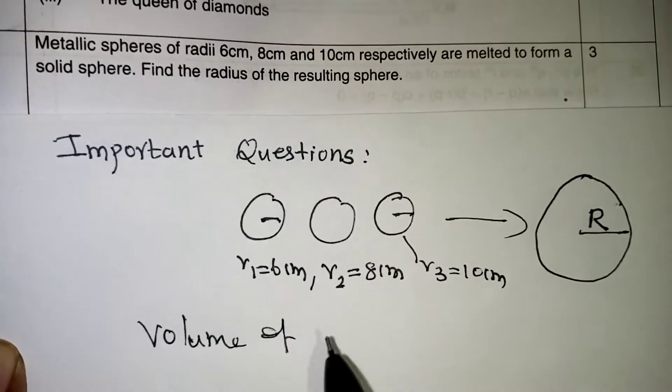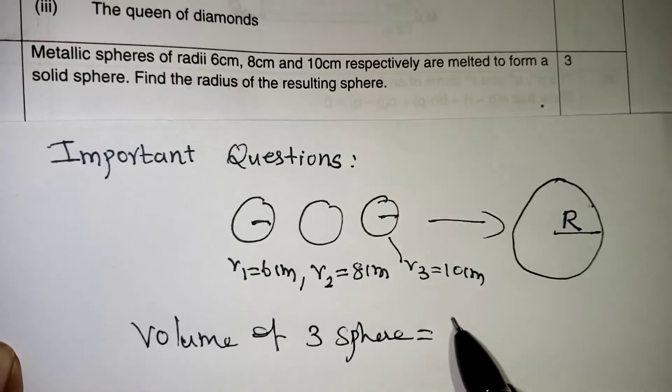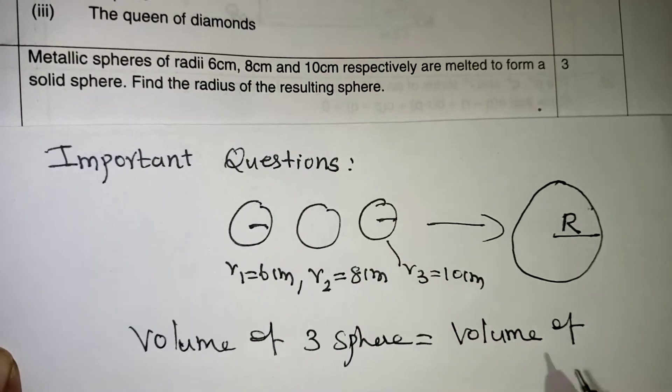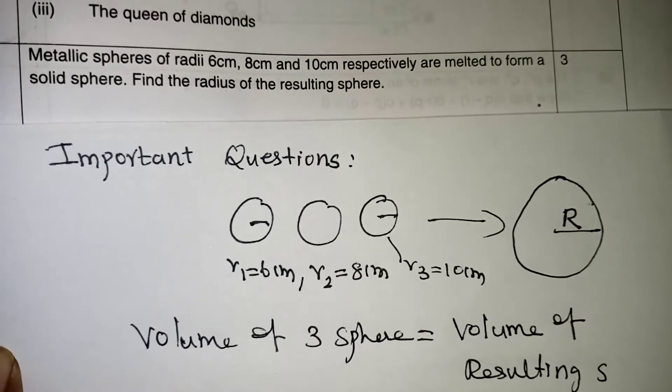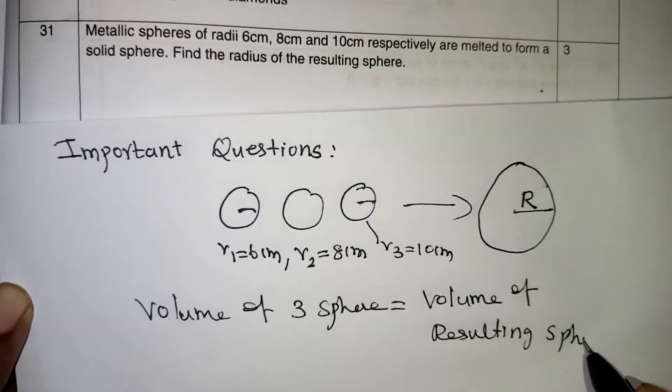So that is what we are going to write now. Volume of three spheres will be equal to volume of the resulting sphere.